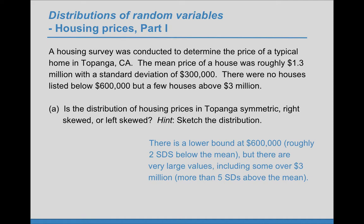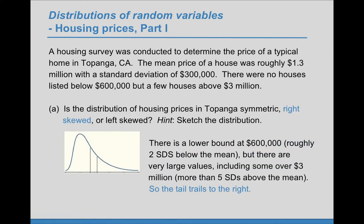That's roughly 2 standard deviations below the mean, but there are very large values that are more than 5 standard deviations above the mean. So we can see that it's not symmetric. Those very large values are going to form a right-hand tail. They're going to stretch to the high values. And so the tail trails to the right, which means it's a right skewed distribution.